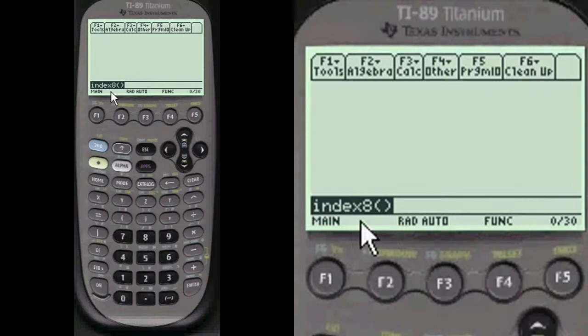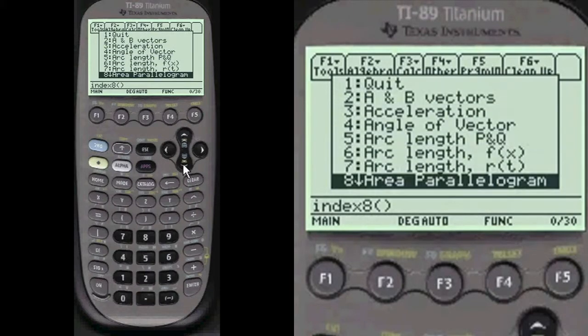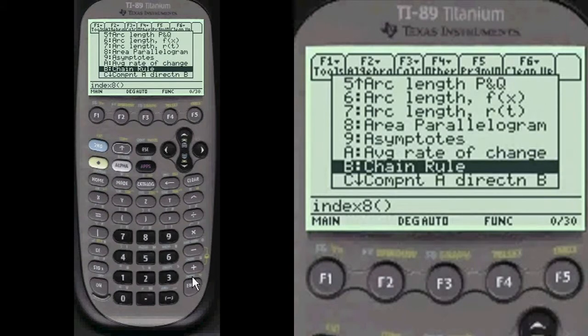Let's do an index 8 to get to my menu for calculus. We're going to scroll down to the C section. They're all alphabetical. Here's the chain rule here.